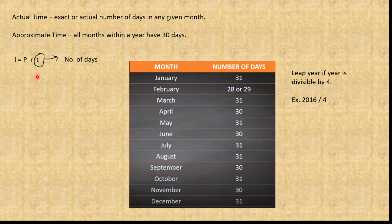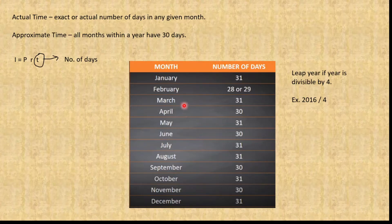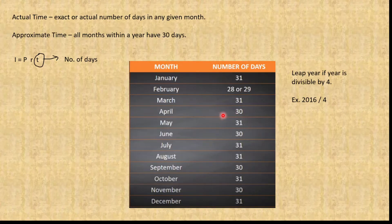The simple interest formula is I equals P times R times T, where the unit for time is always in years. But when the given is in days or actual dates, we use actual time or approximate time. For actual time, we use the number of days as shown on the calendar — for example, January has 31 days, February has 28 or 29 depending on leap year, March is 31, April is 30.